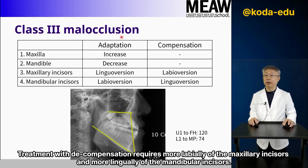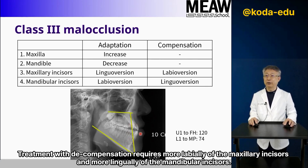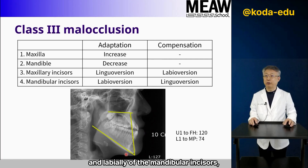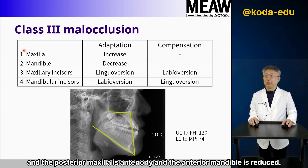Treatment with decompensation requires moving the maxillary incisors more labially and the mandibular incisors more lingually. Adaptation treatment involves moving the maxillary incisors lingually and the mandibular incisors labially, with the posterior maxilla moved anteriorly and the anterior mandible reduced.